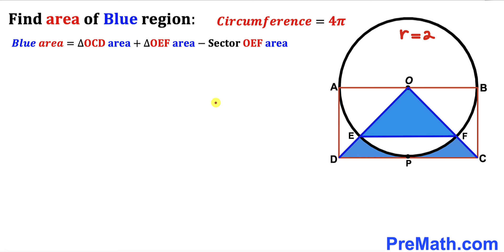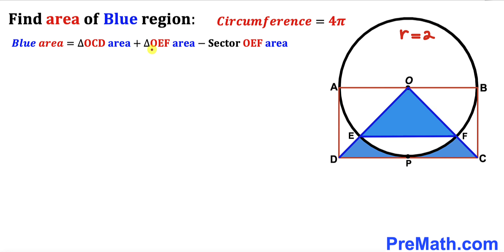Now let's observe that the blue shaded area is equal to the area of the bigger triangle OCD, plus the area of the smaller triangle OEF, minus the area of the big triangle OEF, minus the area of sector OEF. Our task is to calculate each of those values.